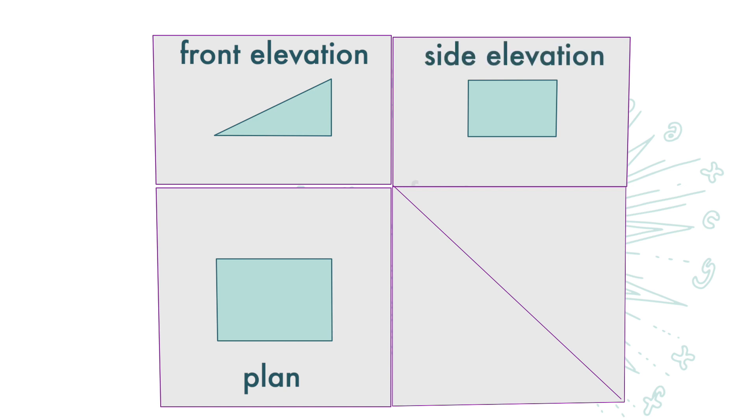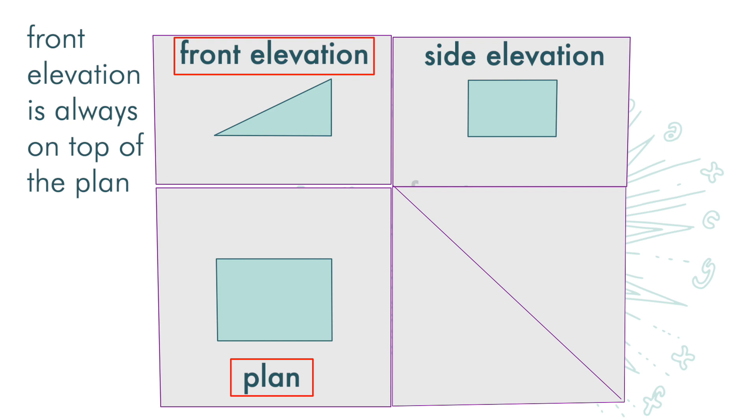The plane is now on the bottom left hand corner. On top of the plane is the front elevation. The front elevation is always on top of the plane, and the side elevation is now to the right of the front elevation.